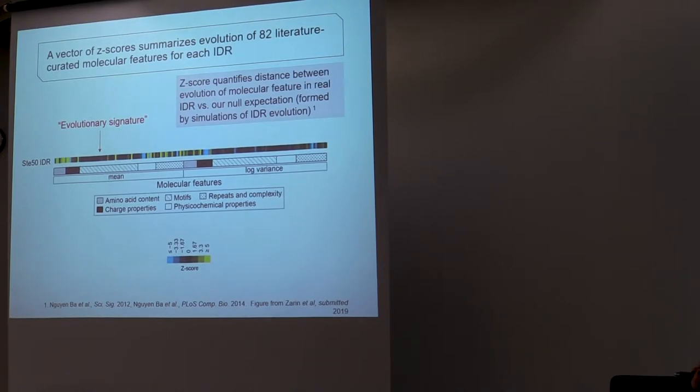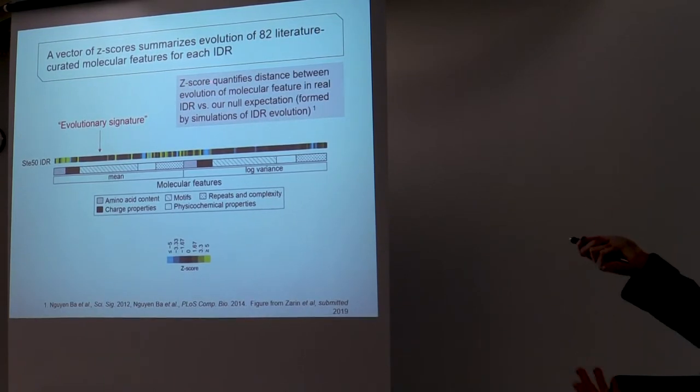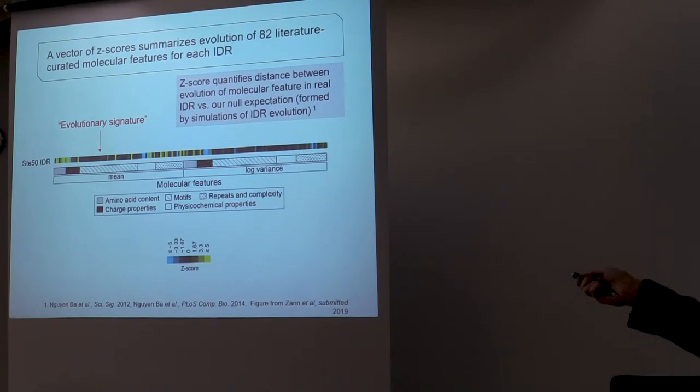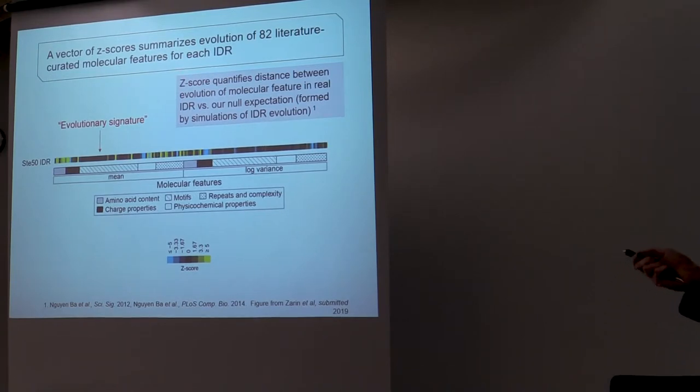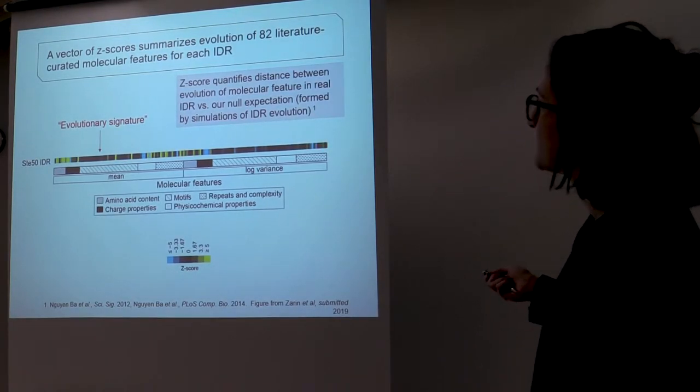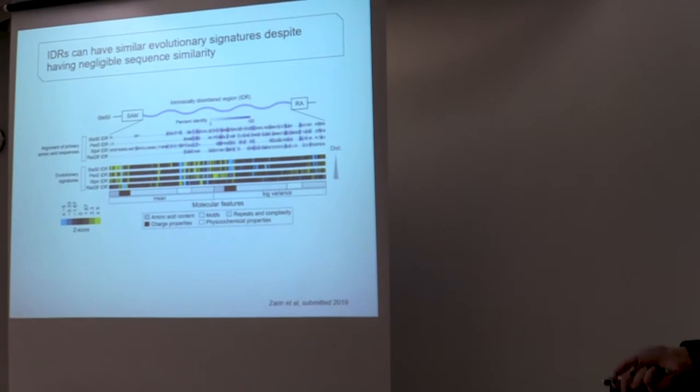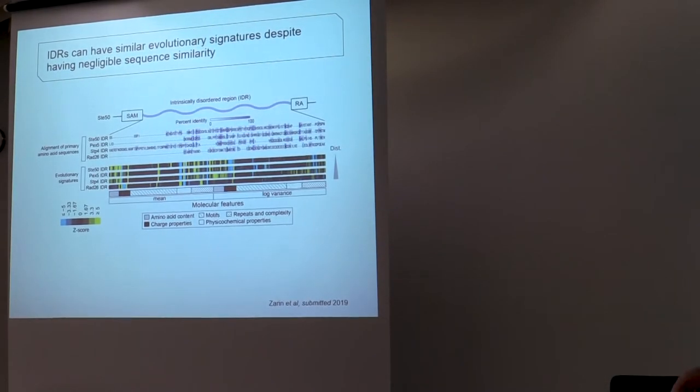After we get a z-score for each molecular feature for each disordered region, we can start to make these vectors of z-scores, which we have called an evolutionary signature. So we think that this evolutionary signature basically summarizes the evolution of each of these molecular features, in this case we have 82 for each IDR. So this gives us a really nice way of quantifying these different molecular features that might be important in each disordered region. And so we can have a quantitative way of understanding how these molecular features are evolving in each disordered region.